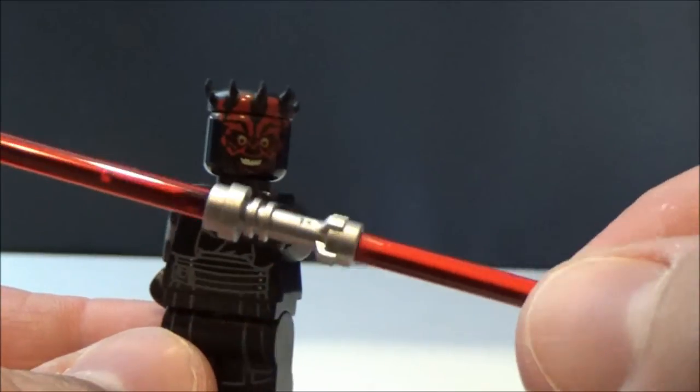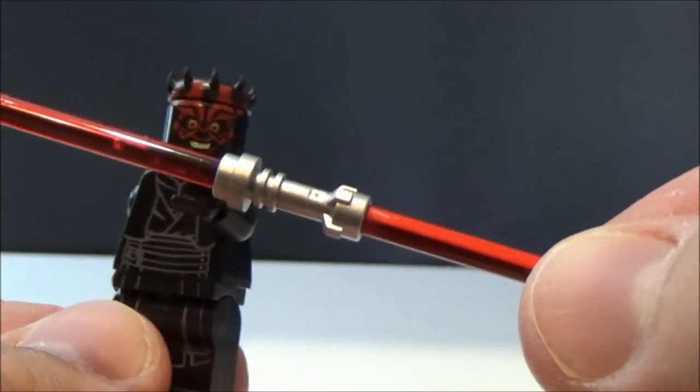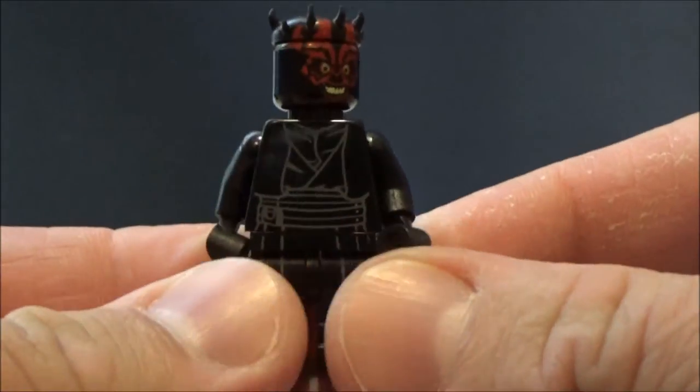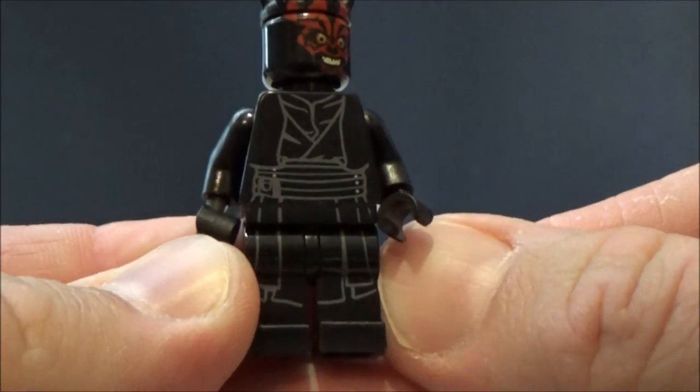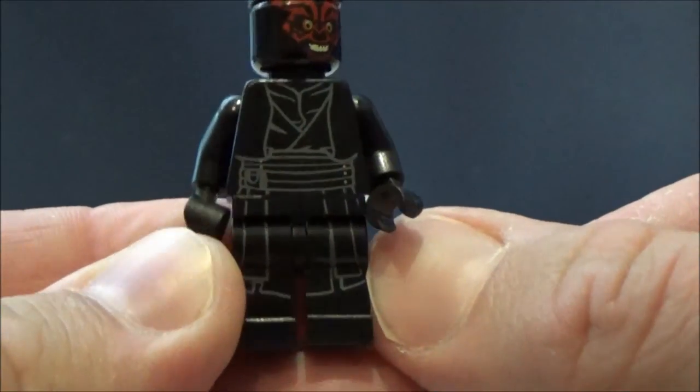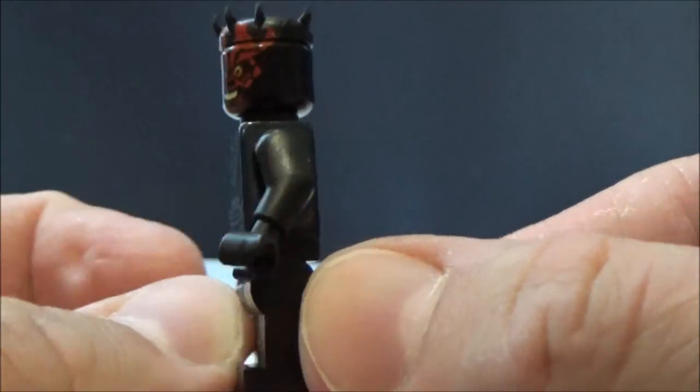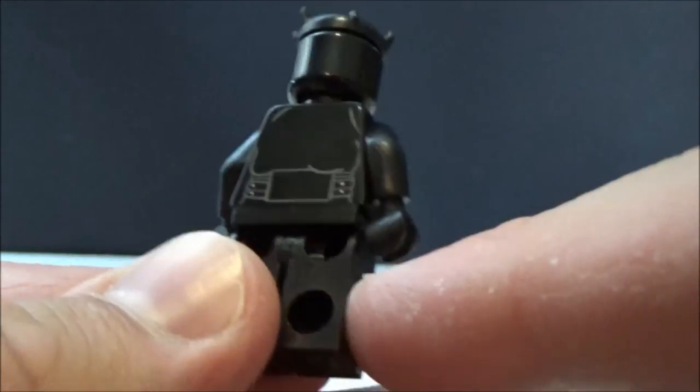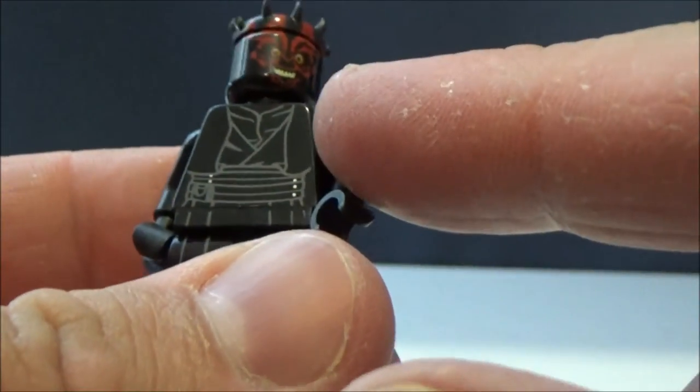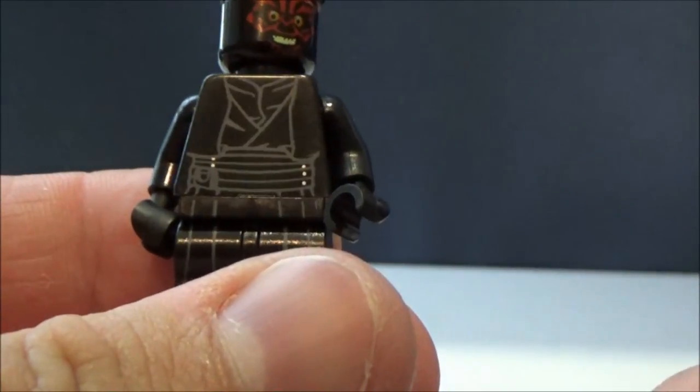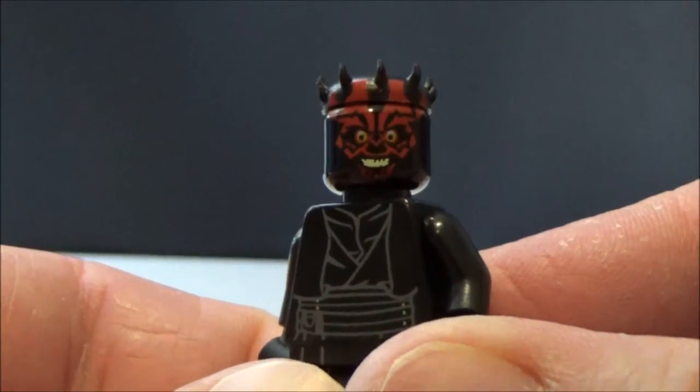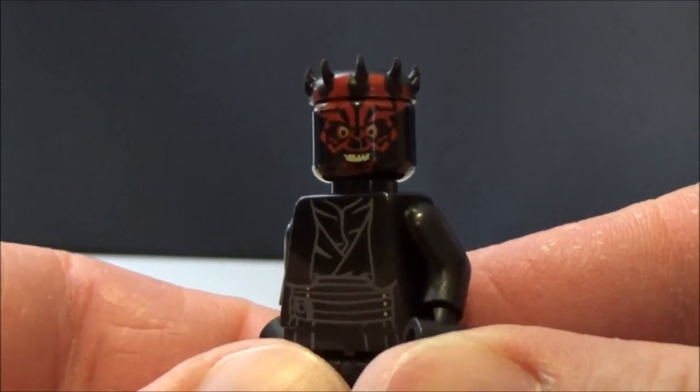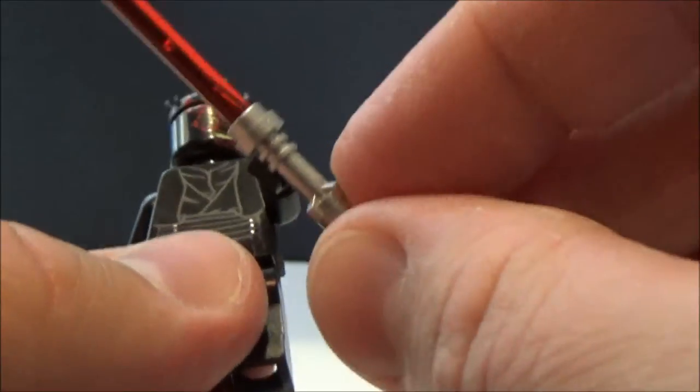The printing is pretty nice, just sort of grey outlines to show you where his robes sit. Again on the back for his belt, a couple of silver studs there for the buttons, same on the front. His face is awesome, really cool print on that. He's a great minifigure, I'm a really big fan of Darth Maul.